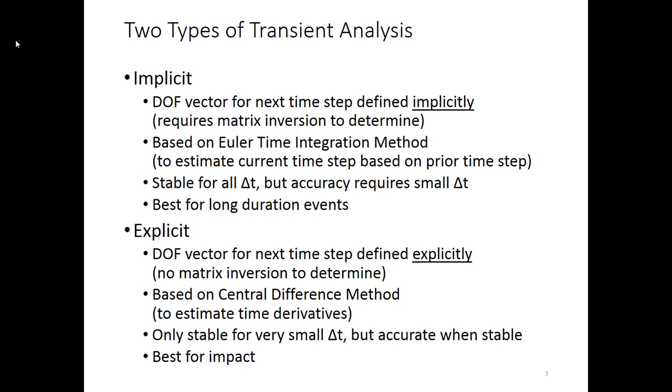The explicit analysis is where we don't have to do a matrix inversion in order to find the degree of freedom vector for the next time step. That's pretty exciting. And it is only stable for very small delta T's, but as long as it doesn't blow up, the result remains finite, then accuracy is going to be assured. It is best for impact events, because you have to do very small time steps, but each time step calculation is pretty quick.